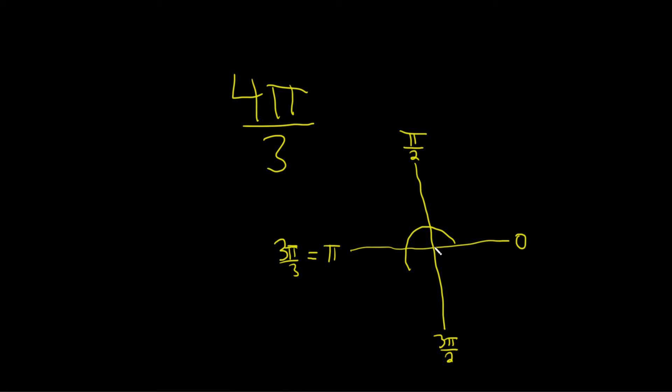So 4π over 3 is down here somewhere, it's like π over 3 more. So it would be 4π over 3.